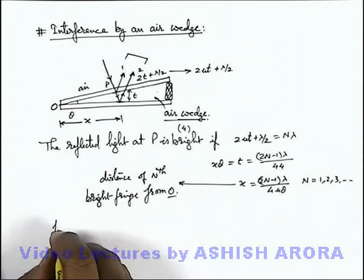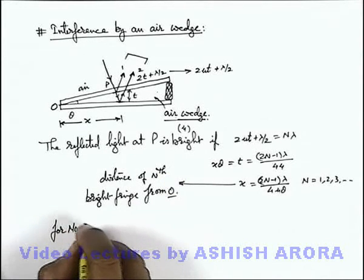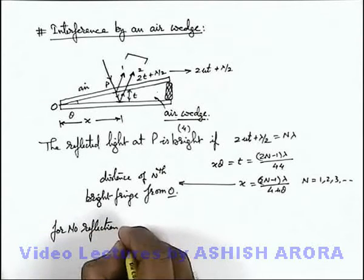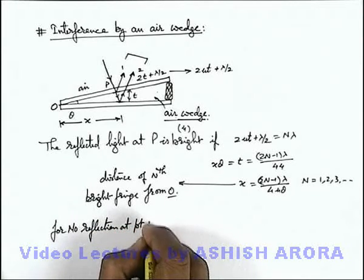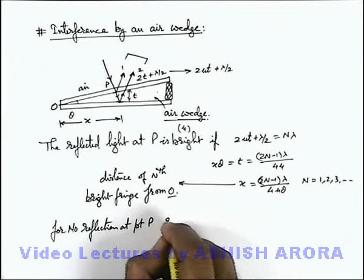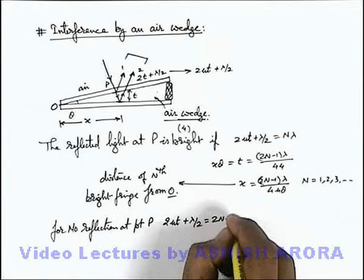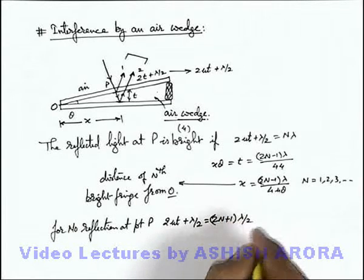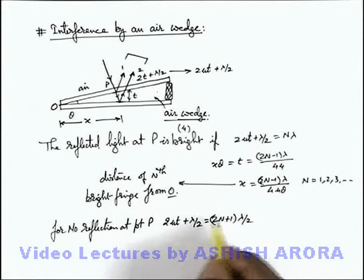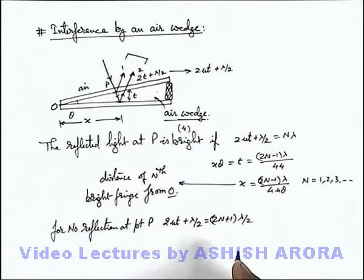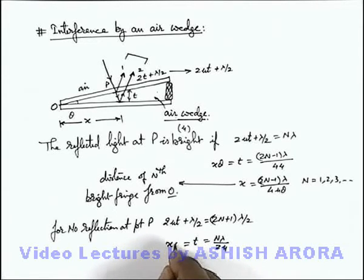Similarly, for no reflection at point P, we can write 2 mu t plus lambda by 2—the path difference will be (2n + 1) lambda by 2. This is an odd multiple of lambda by 2. Here, mu we can take as 1 if this is an air wedge. So we are getting the value of t equal to n lambda by 2 mu, or if t is substituted as x theta, the value of x we are getting is n lambda by 2 mu theta.